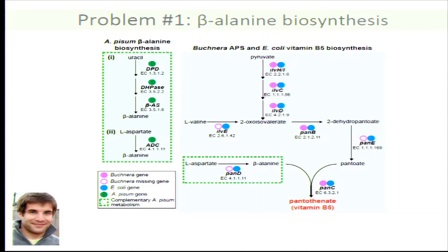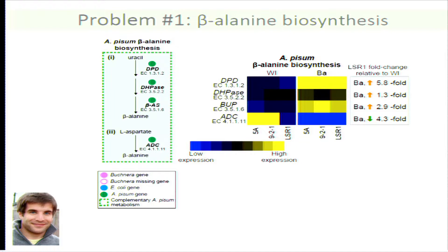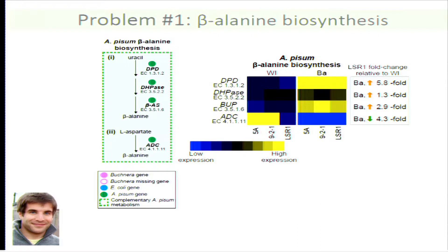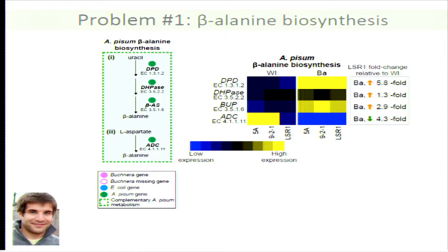It turns out the pea aphid has two ways to make beta-alanine: a biosynthesis pathway from uracil, and conversion of aspartate to beta-alanine. Looking at gene expression in whole insect versus bacteriocyte across three aphid lineages, genes in the pathway from uracil to beta-alanine are upregulated in bacteriocyte cells, whereas the gene for conversion of aspartate to beta-alanine is downregulated in bacteriocytes. We argue that the pea aphid is synthesizing beta-alanine in bacteriocytes via the uracil degradation pathway for provision to Bucknera.